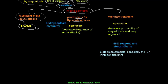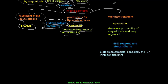For prophylaxis to reduce the frequency of acute FMF attacks, we use colchicine — the same drug used in gout. Colchicine decreases the frequency of acute attacks but has side effects including bone marrow hypoplasia and acute myopathy. Colchicine is also the maintenance treatment for FMF; it decreases the probability of amyloidosis and can even mildly regress existing amyloidosis.